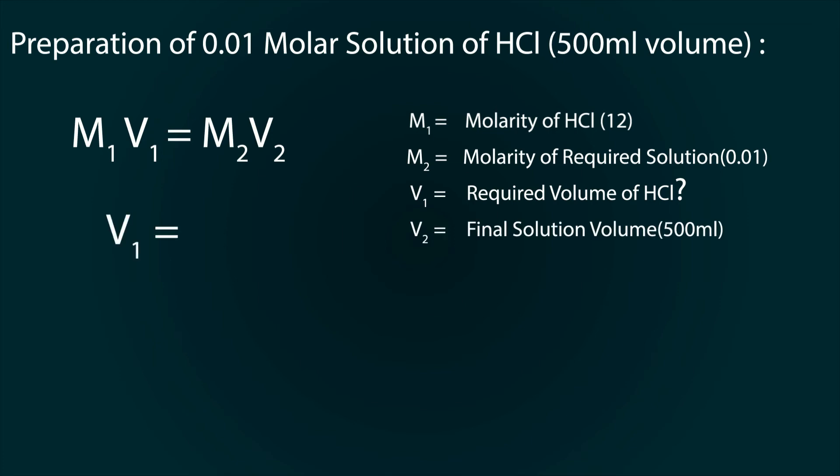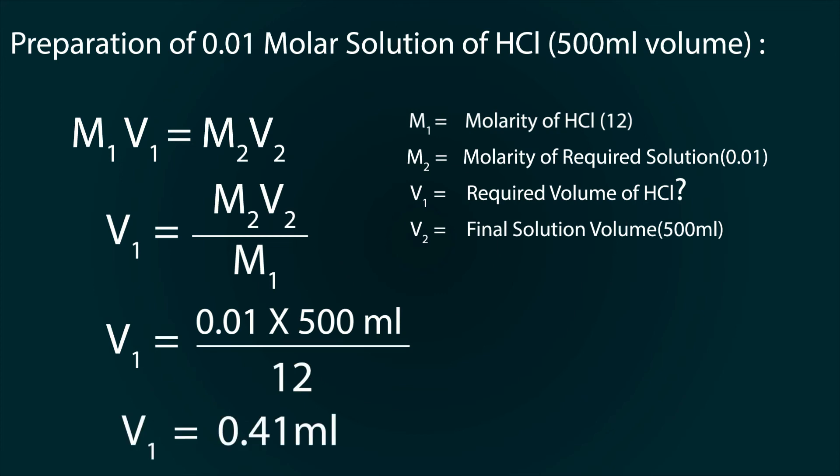So V1 equals M2V2 whole divided by M1. By putting the values, we get 0.01 multiplied by 500, whole divided by 12, and we get our required volume as 0.41 ml.